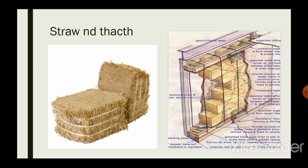Next is raw straw thatch. This thatch straw is normally obtained from wheat after harvesting — the leftover is collected and bundled up. The thatch is first chemically treated by dipping in a copper chromite boric acid solution containing 1% copper sulfate, 1% potassium, and 1–5% boric acid for a period of 2 hours. After removing from the solution, it is kept for drying and then bundled. It can then be used even in heavy rainfall regions, but it does not have fire resistance properties.